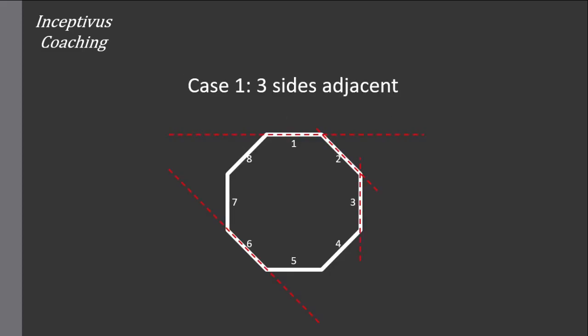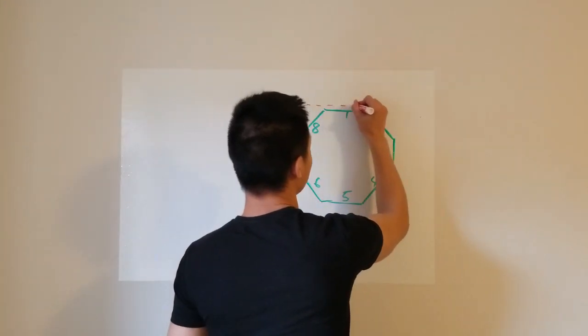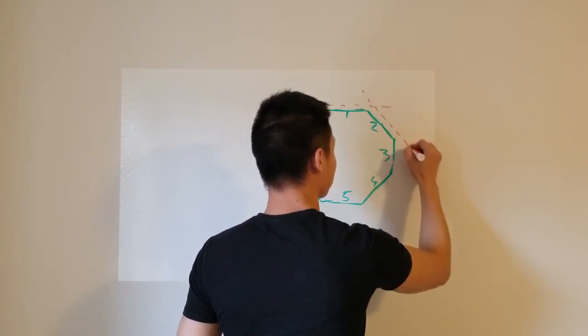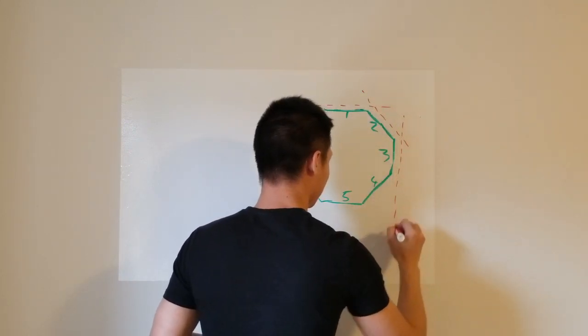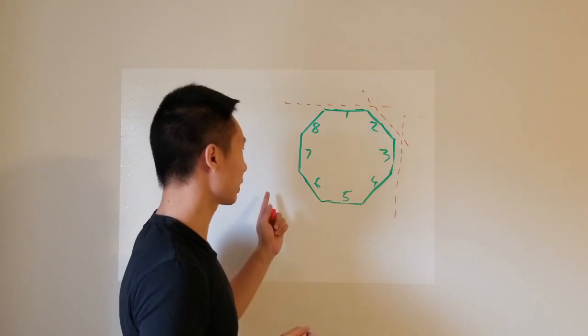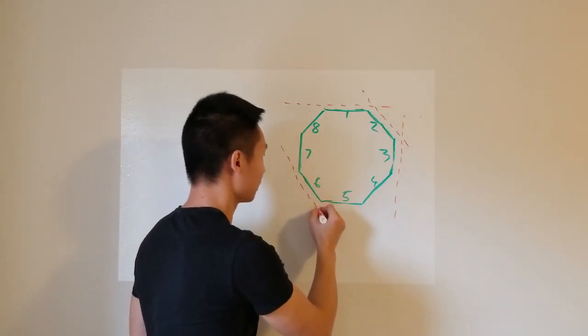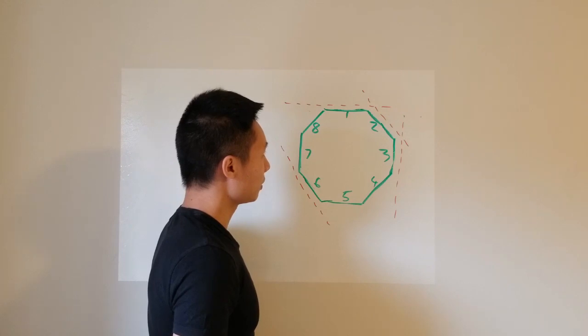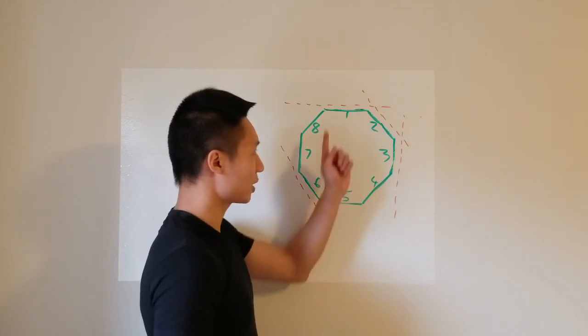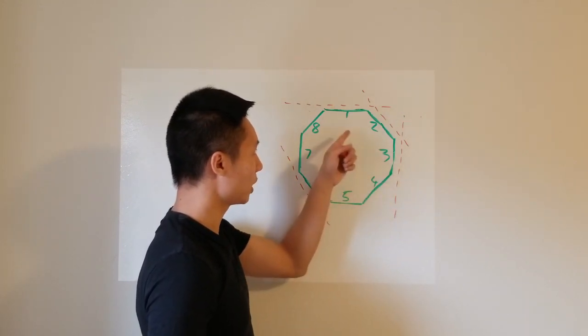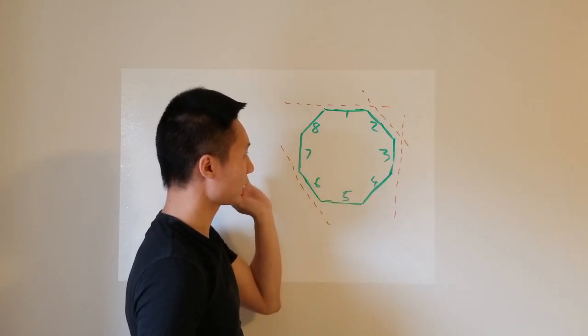Let's first start with case 1, when we allow 3 sides to be adjacent to each other. So suppose I choose side 1, 2, and 3 together. Then the 4th side really has no choice other than 6. And the question is, then how many ways can I choose these 3? Because when I choose these 3, the 4th is fixed.